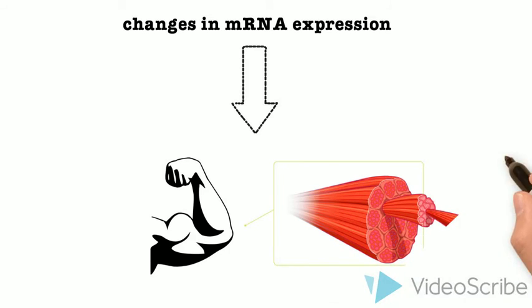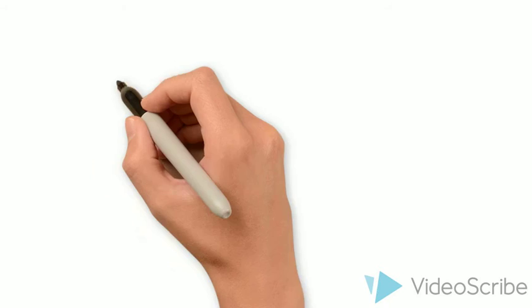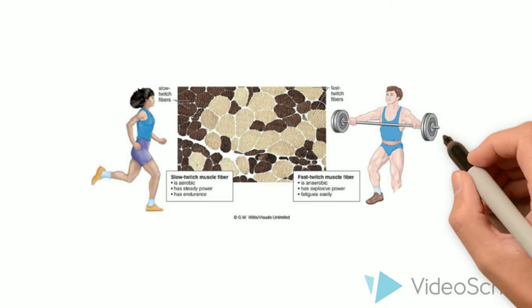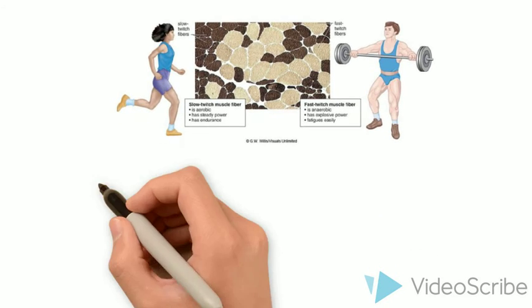Muscle fibers are commonly classified as slow twitch type 1, which has high mitochondrial content, and fast twitch type 2, which has low mitochondrial content. As the endurance portion of the workout increases, there is an increase in slow twitch fibers.